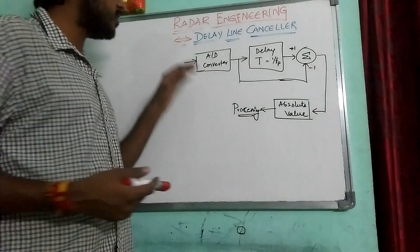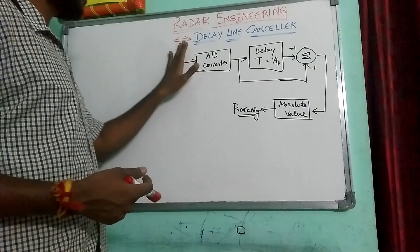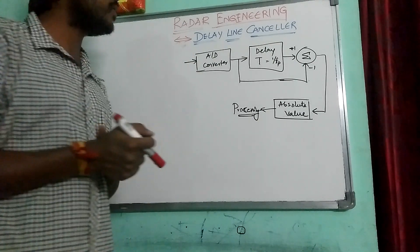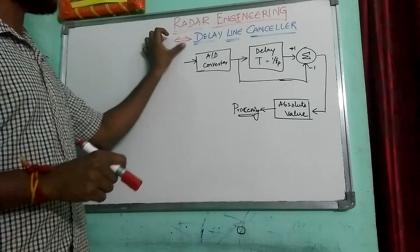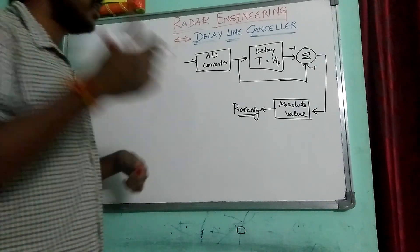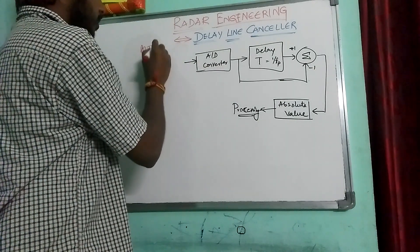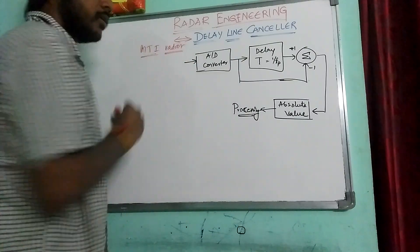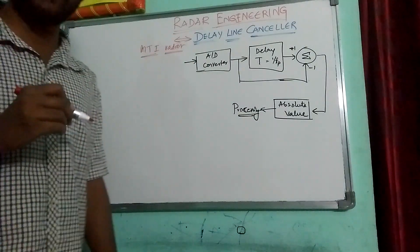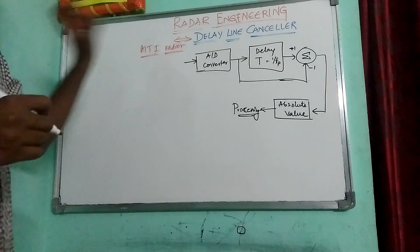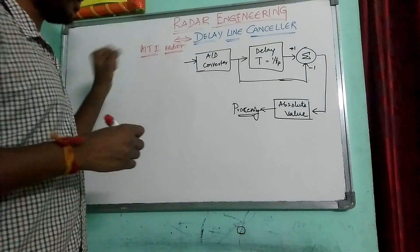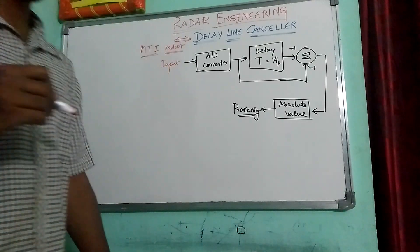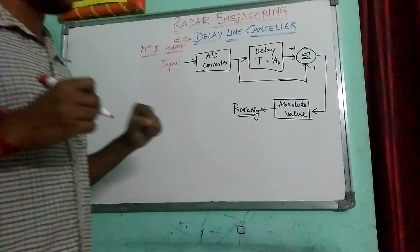So friends, today this topic is DLA cancelling. This is one of the important topics whenever we consider the MTI data — Moving Target Indicator data. This data is used for the detection of moving targets. The current discussion is DLA cancelling.